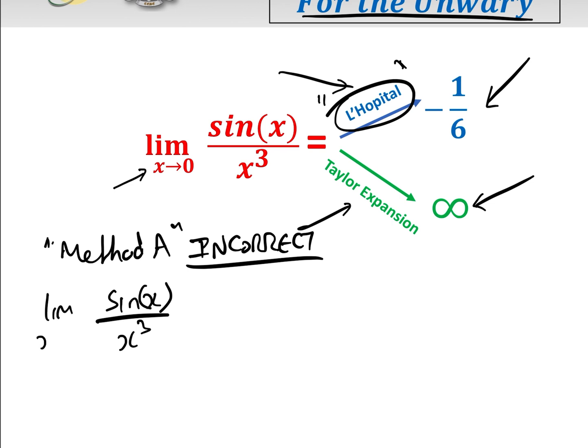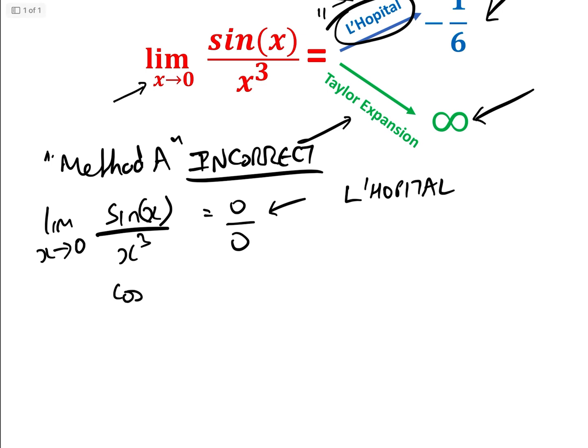The limit as x approaches 0, it's 0 over 0, which is indeterminate. So we think, okay, good. Let's use L'Hopital. And we go, that's easy. Differential of sine x is cos x over 3x squared.